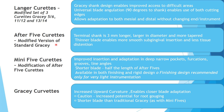Modifications of curettes: Langer curettes are a modified set of three curettes combining Gracey 5/6, 11/12, and 13/14 shank design, enabling improved access to difficult areas with universal blade angulation at 90 degrees to the shank, allowing use of both cutting edges and adaptation to both mesial and distal without changing the instrument. After Five curettes are a modified version of standard Gracey curettes where the terminal shank is 3 mm longer, larger in diameter, and more tapered, enabling smoother subgingival insertion and less tissue distension.